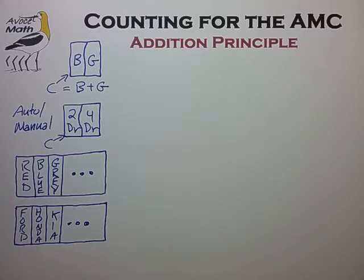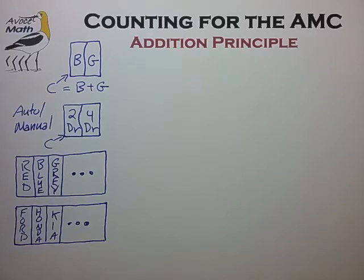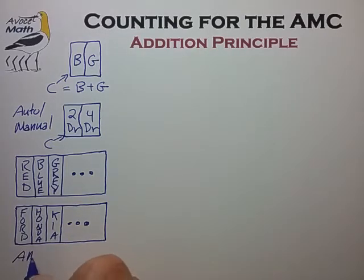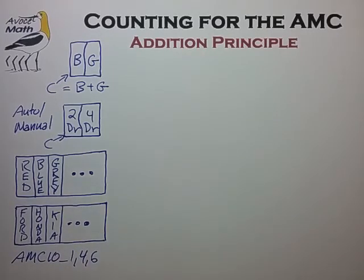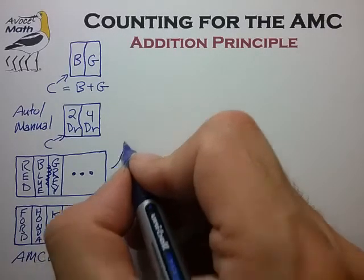These examples give some idea of how we can use the principle of dividing a set into suitable subsets to make a counting task easier. This principle is discussed in more detail in the coming videos for AMC 10 problems 4 and 6. Now I'd like to go back to the case of blue and gray cars where we had the possibility of cars that were both blue and gray.